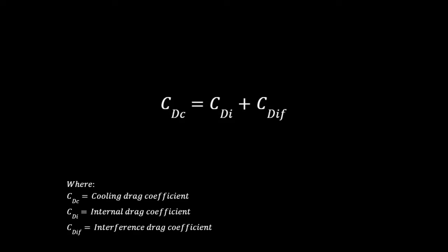When we look at the cooling drag coefficient equation we can see it's made up of the internal drag and interference drag. Interference drag is concerned with where we eject the system air and the internal drag is related to the ducting design and radiator itself. Today we'll just be looking at the internal drag.